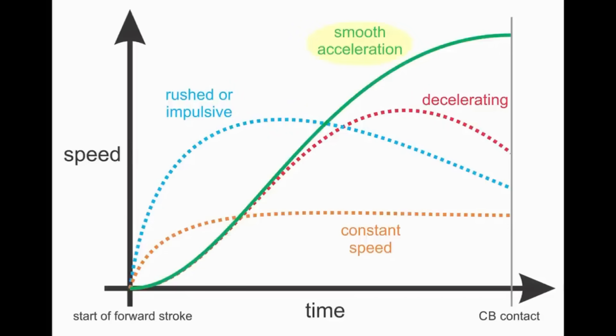Here's a graph that compares a good, smoothly accelerating stroke to several common bad timing strokes. The graph shows how cue speed changes with time from the beginning of the forward swing to tip contact with the cue ball. A stroke with good timing starts forward slowly and smoothly accelerates to maximum speed at the cue ball.